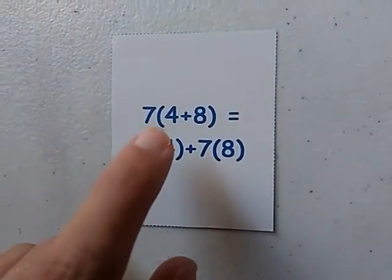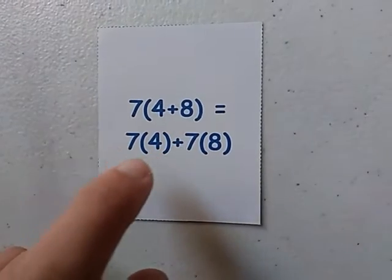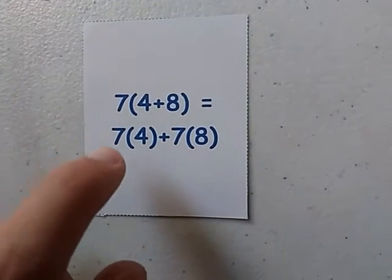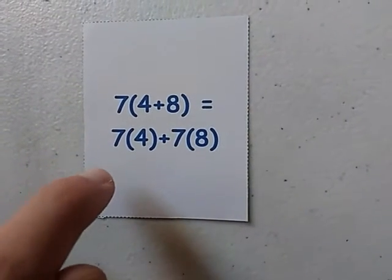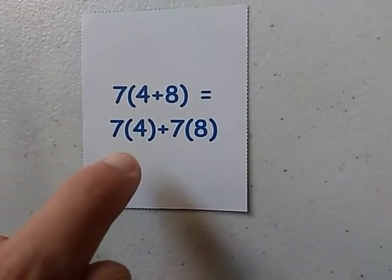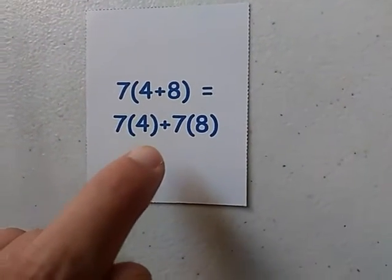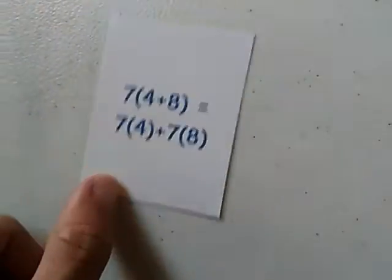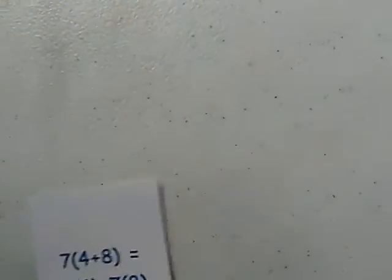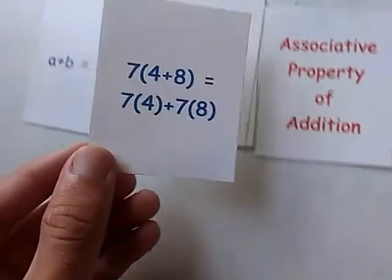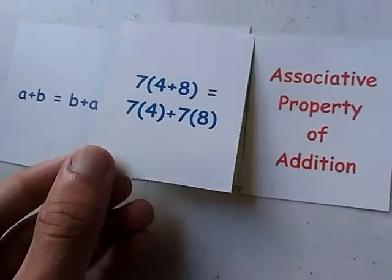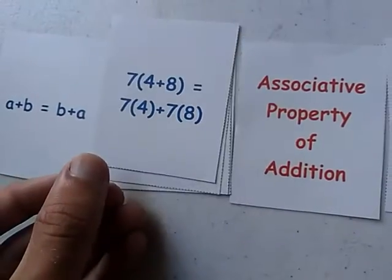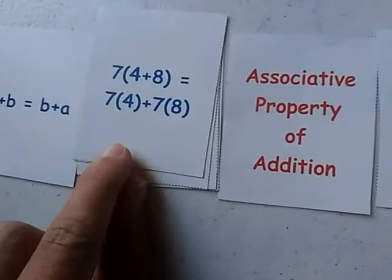4 plus 8 times 7 equals 7 times 4 plus 7 times 8. This is another example of the Distributive Property, and we have a Completed Stack right here.